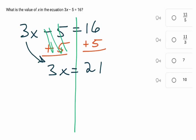And then 3 times what equals 21? Well, if you don't know, you can divide by 3 to figure it out. We divide by 3. x is going to equal 21 divided by 3, which is 7. And the best answer is going to be 7, which I think is C right there.